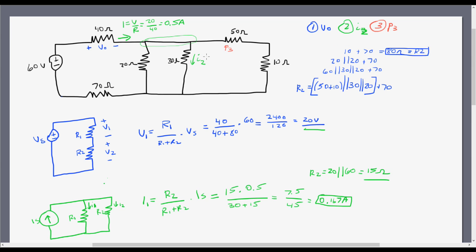Using the voltage divider and the current divider, I can boil things down to two resistors in each case and solve for the voltage or current through one resistor. Now I need to find the power being dissipated in the 50 ohm resistor. We know power equals current times voltage, or I²R, or V²/R. I want the fastest approach, so let me check what I know — I don't currently know the voltage across that resistor or the current through it.